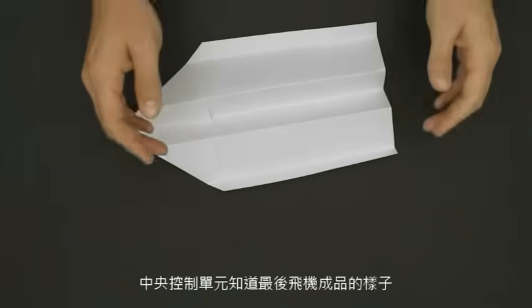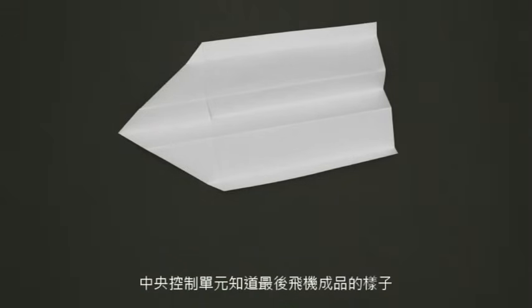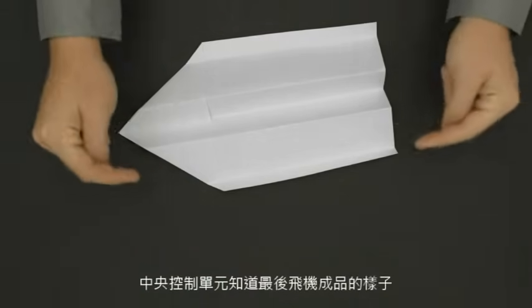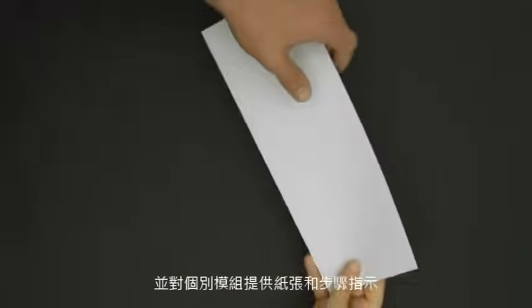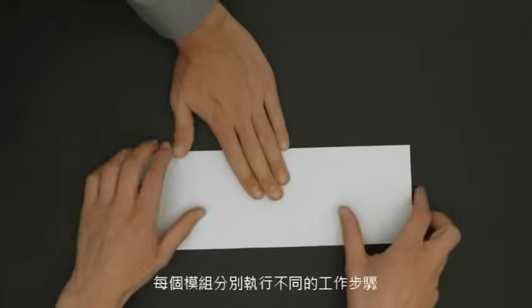This is the central hub. It knows what the plane will actually look like at the end and gives the paper and the folding instructions to the individual modules.